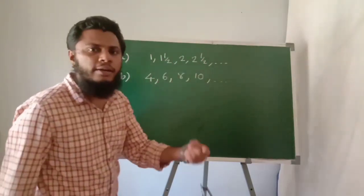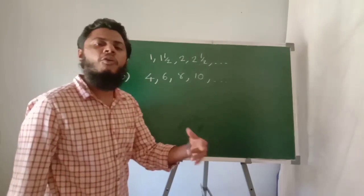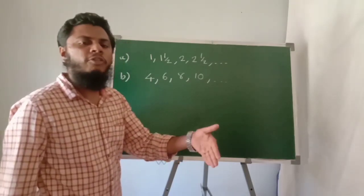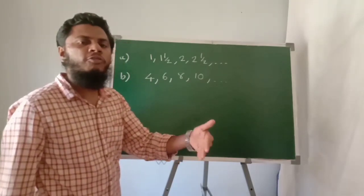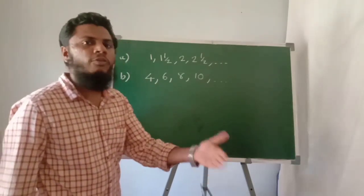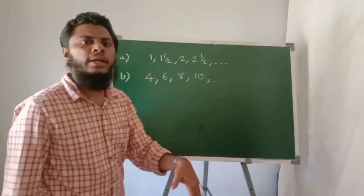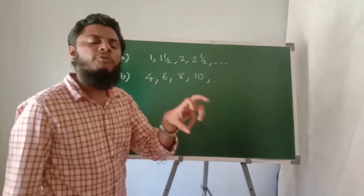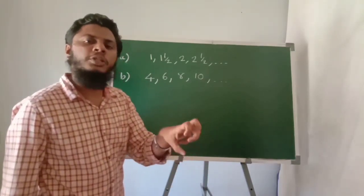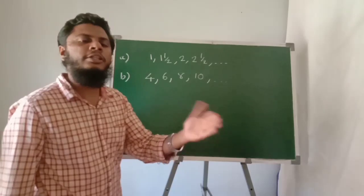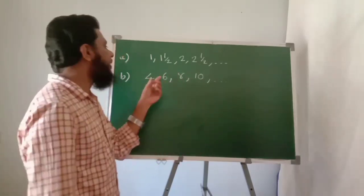To verify: 1 and a half plus 1 and a half plus 1 and a half plus 1 and a half equals 4 times 1 and a half. 1 and a half plus 1 and a half is 3; 3 plus 3 is 6.